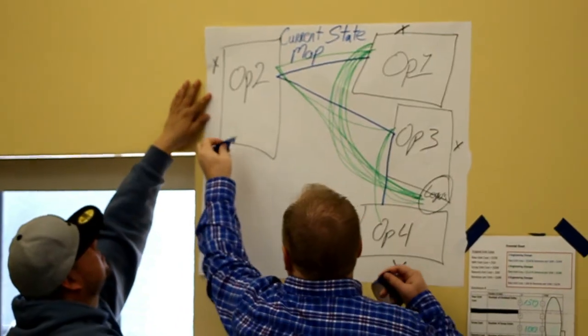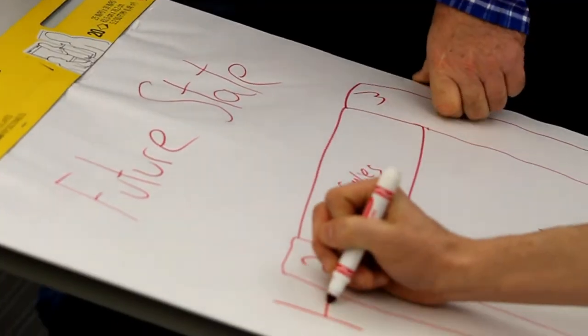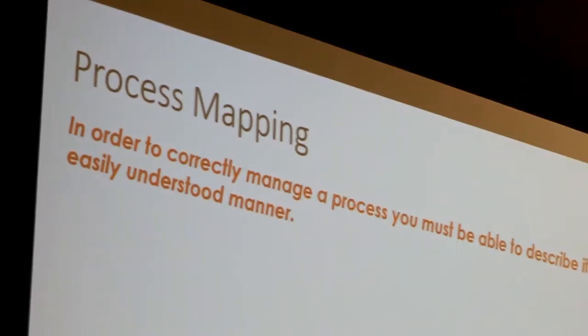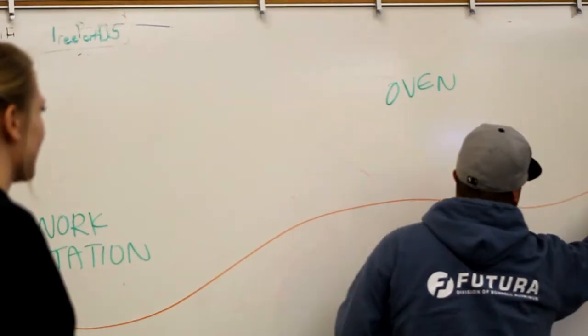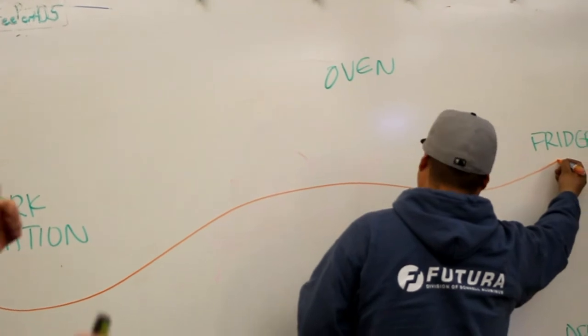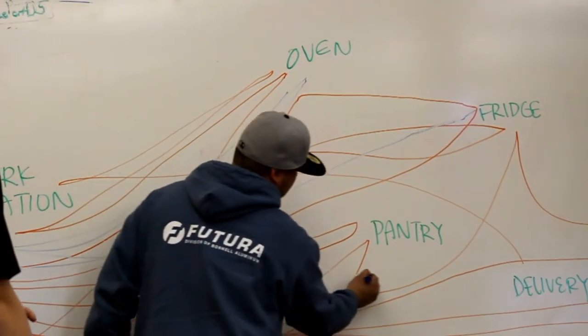We can draw a current state map which identifies where we are and a future state which identifies where we're going. We create process maps, one being a spaghetti map. Very quickly you can identify waste of motion and waste of transportation.